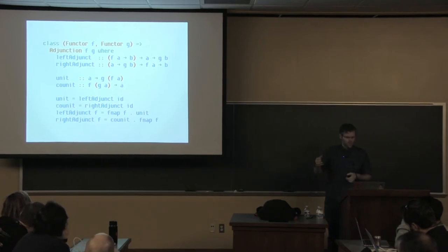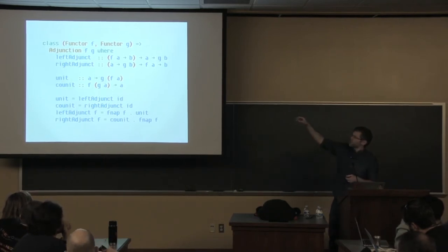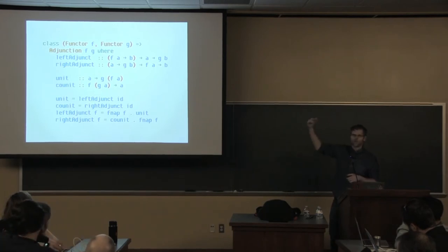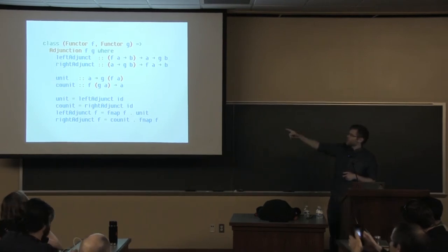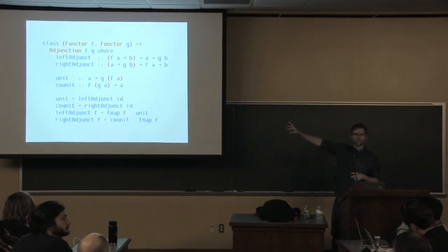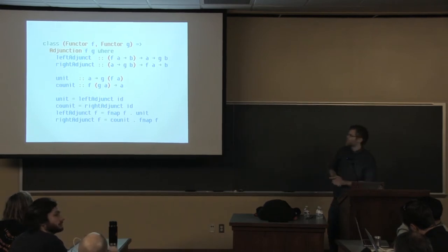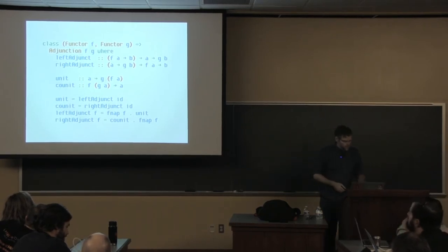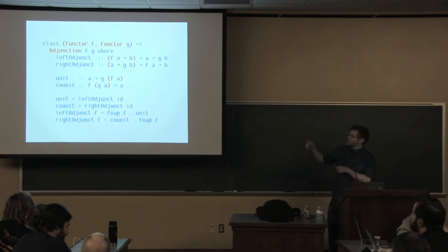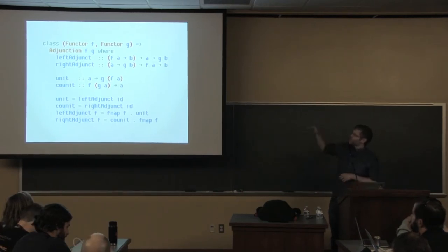To make an adjunction, we just have to specify either the left adjunct and right adjunct witnesses to the isomorphism, or we have to give the unit and the co-unit. We can give one or the other pair and define one in terms of the other. The minimal implementation is just some combination: a left adjunct and co-unit, or unit and right adjunct.